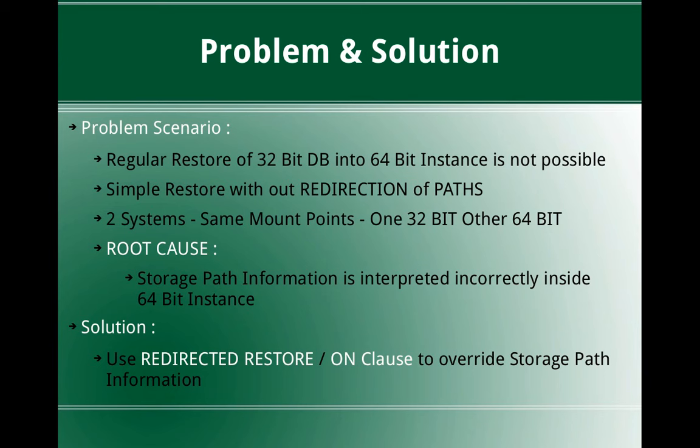What I mean is, say for example, there are two systems with exactly the same mount points. The only difference is one is a 32-bit OS with a 32-bit DB2 edition, and the other system is a 64-bit edition of DB2 with a 64-bit OS. They are identical in terms of mount points — the tablespace containers, log path, storage paths — everything available in the 32-bit machine is set up the same way in the 64-bit machine.